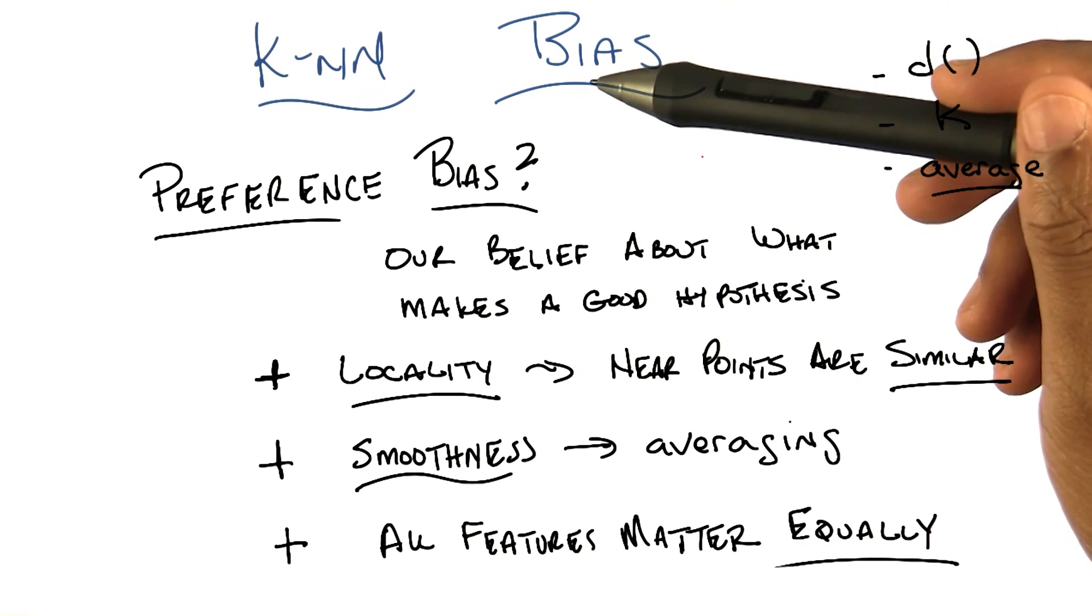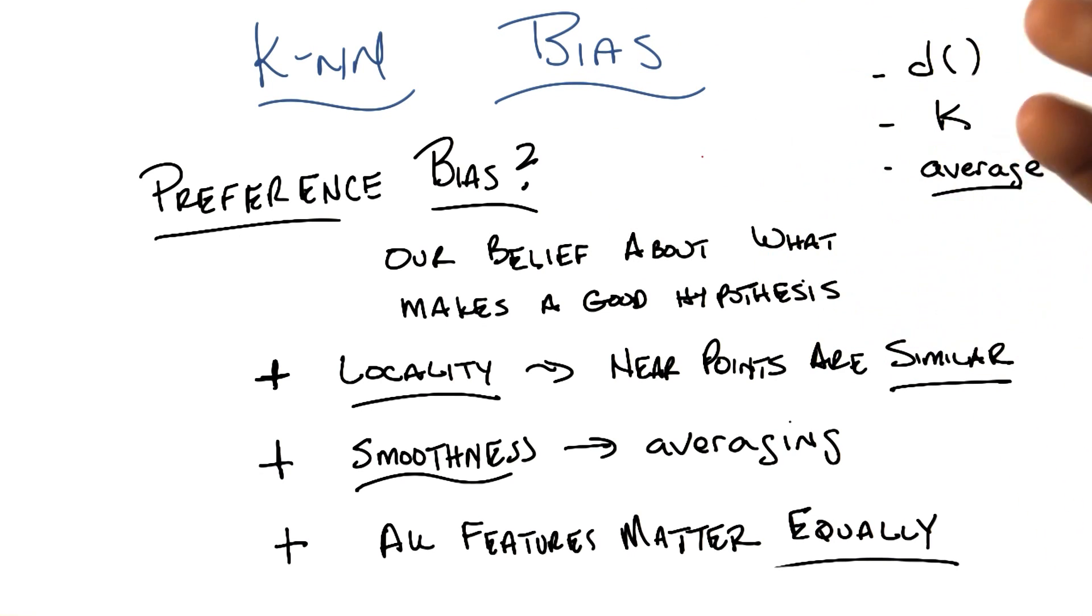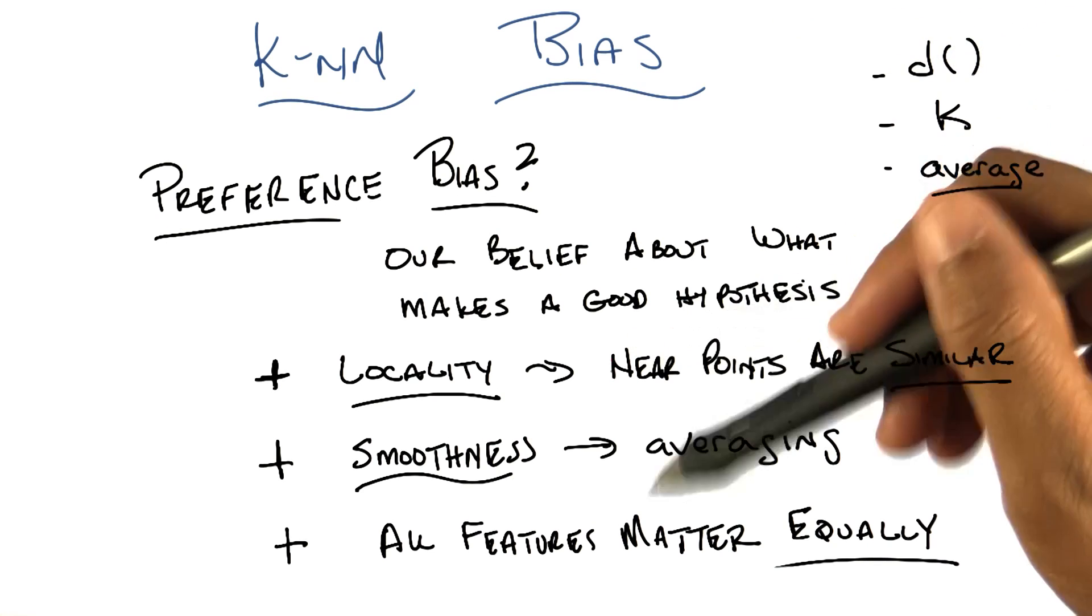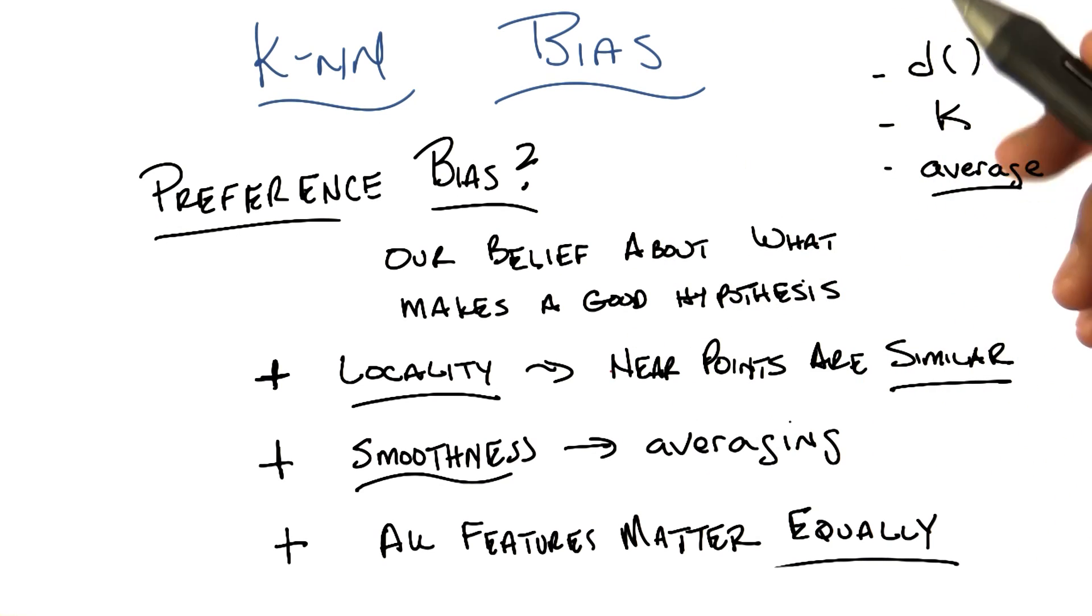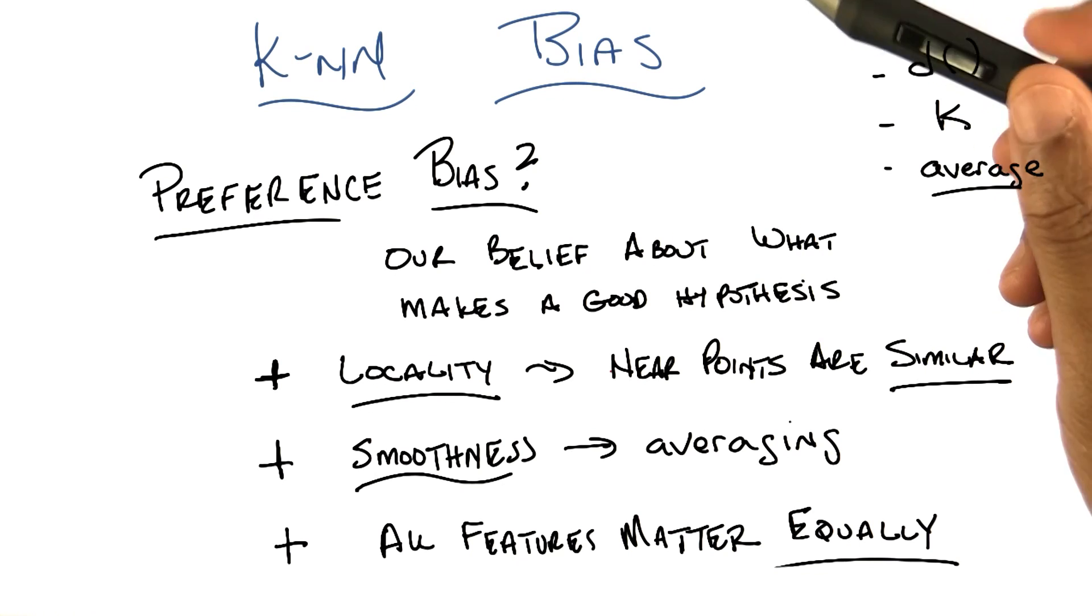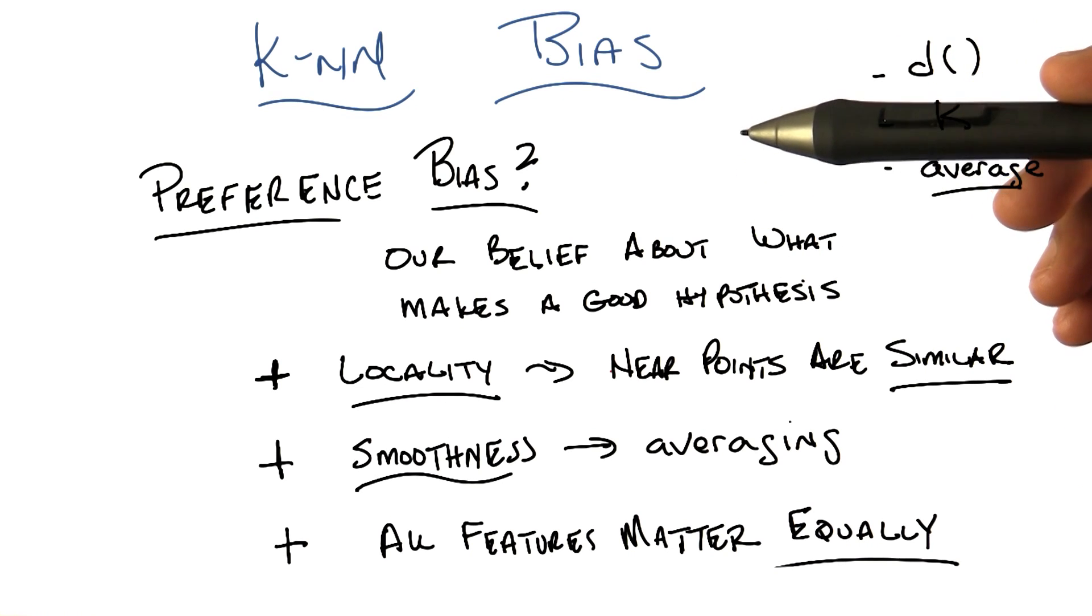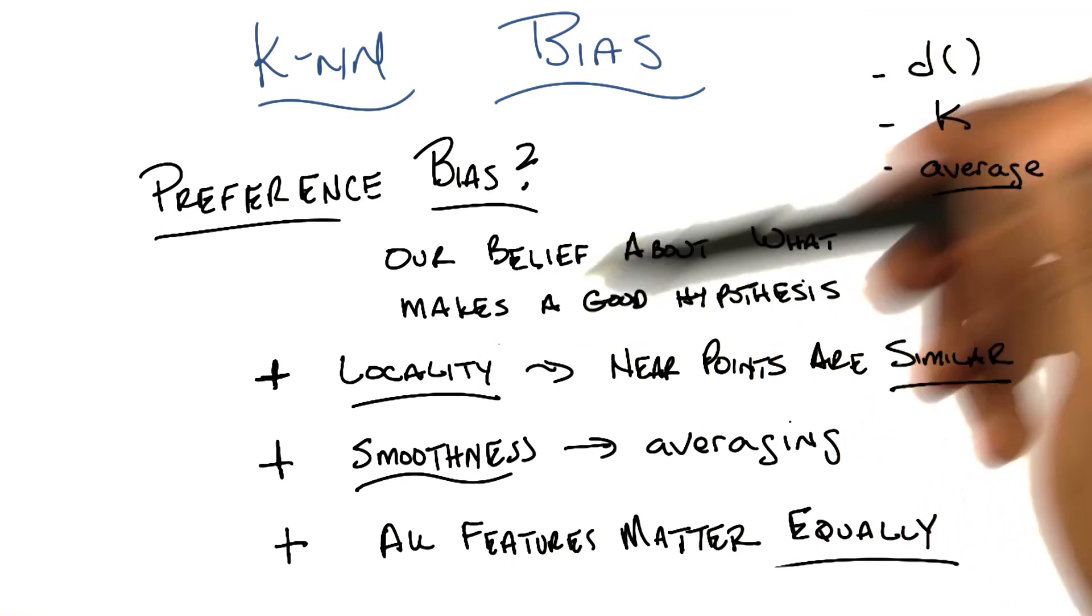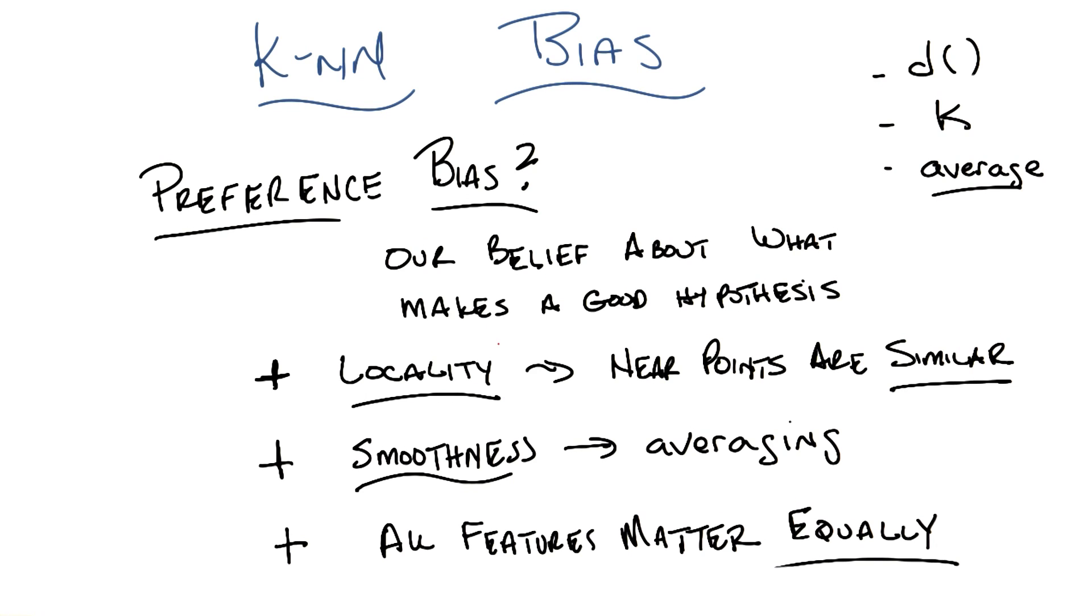And KNN is no exception. It also has preference bias built in, as does every algorithm of any note. So I just wanted to go through three that I thought of as being indicative of this bias, and they're kind of all related to one another. So the first one is a notion of locality, right? There's this idea that near points are similar to one another. Does that make sense to you?